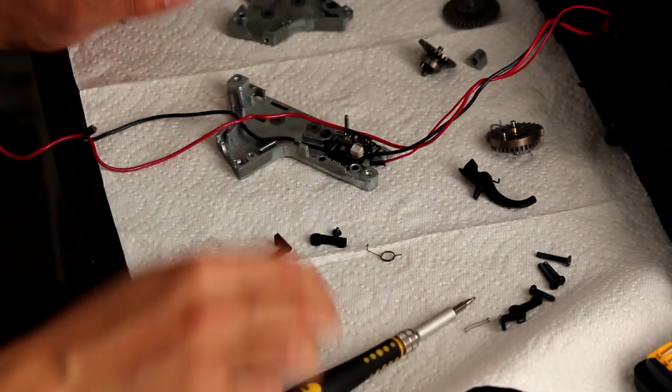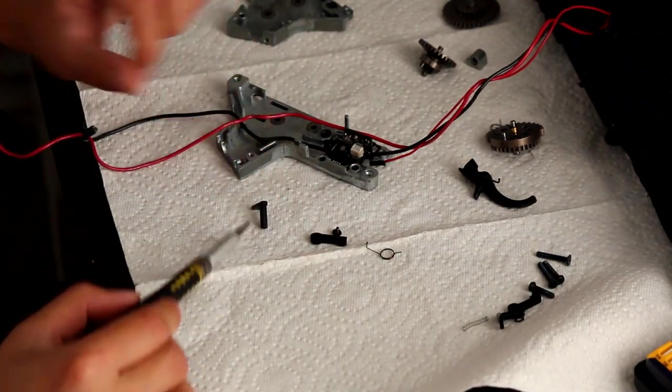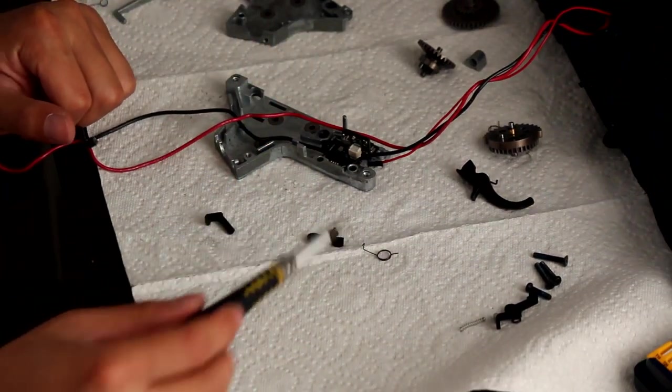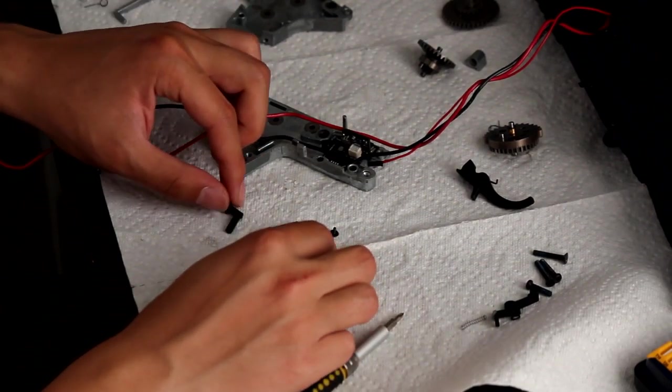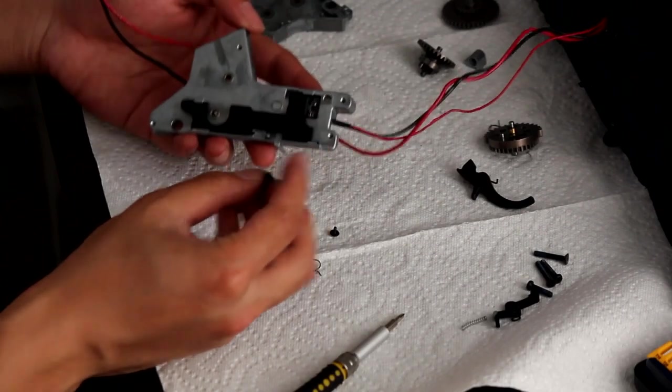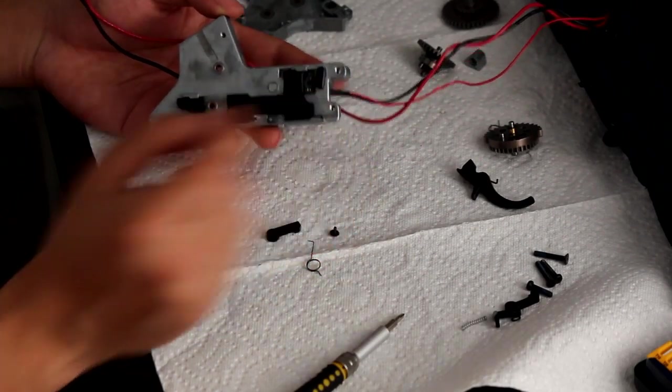The safety lever has three parts: it has the long stemmed flag looking thing, it has an arm, and it has a spring. So what you're going to want to do is, you're going to put the flag through the back.